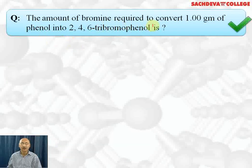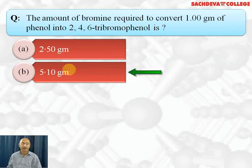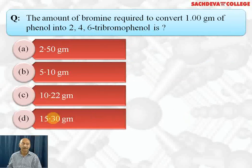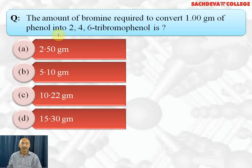Next question: what amount of bromine is required to convert 1 gram of phenol into 2,4,6-tribromophenol? Options are 2.5 g, 5.10 g, 10.22 g, and 15.3 g. Phenol reacts with 3 moles of bromine water to give 2,4,6-tribromophenol. The molecular weight of phenol (C6H5OH) is 94. So 94 g of phenol reacts with 3 × 180 = 540 g of bromine. Therefore, 1 g of phenol reacts with 540 ÷ 94 = 5.74 g, giving approximately 5.10 g. The correct answer is B.